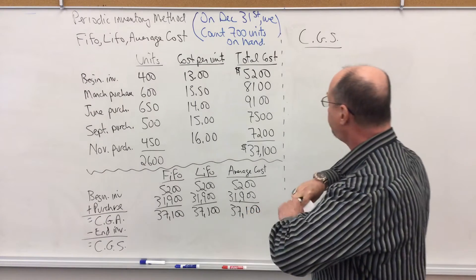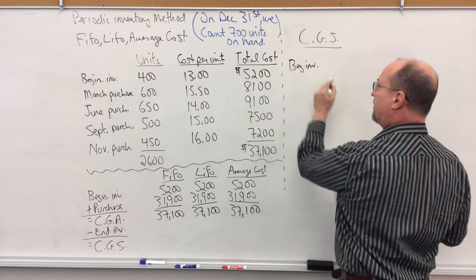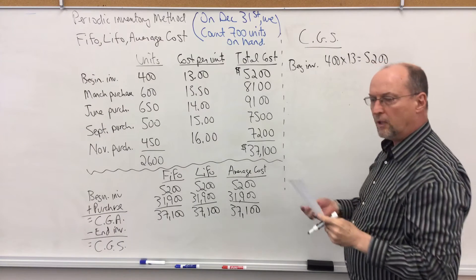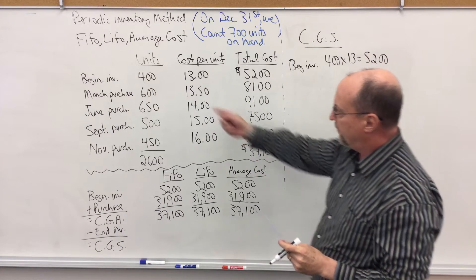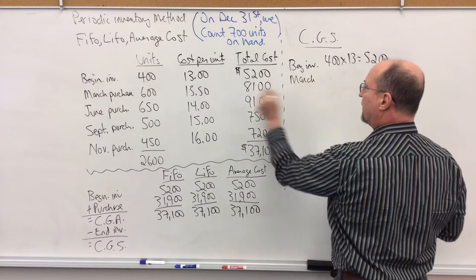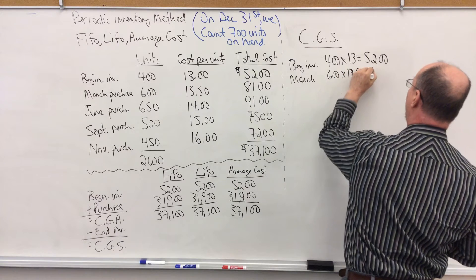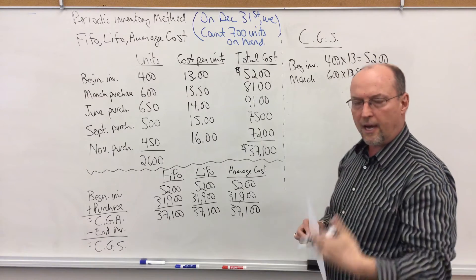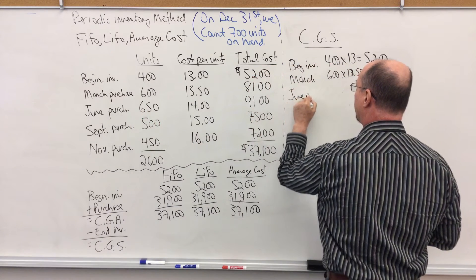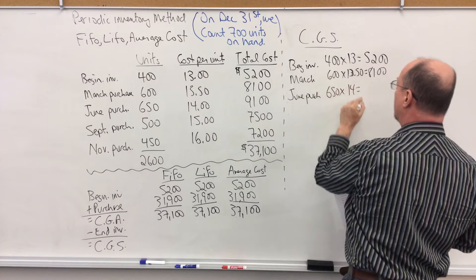First in, first out. Beginning inventory — we'll assume these were the first ones sold: 400 times $13 is $5,200. We sold 1,900 units total, so the first 400 are from beginning inventory. We'll assume the next oldest ones from March were sold next: 600 units times $13.50 equals $8,100. That's 1,000 units — I still have 900 units to go. So then the next ones sold will be the next oldest, which are the June purchases: 650 at $14 a piece is $9,100.